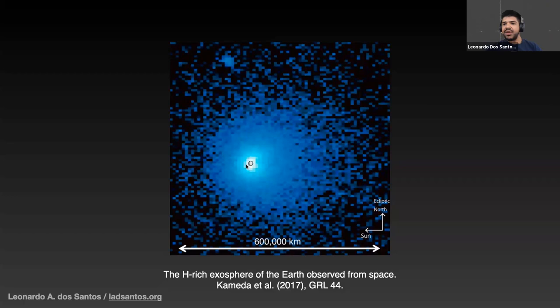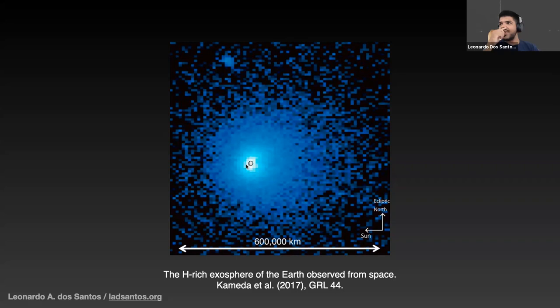It could also have methane — methane also produces a hydrogen-rich exosphere, though probably not as hydrogen-rich as if it were water. If you found something like this around an exoplanet, you can infer a little about the composition of the lower atmosphere.